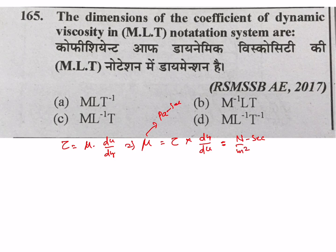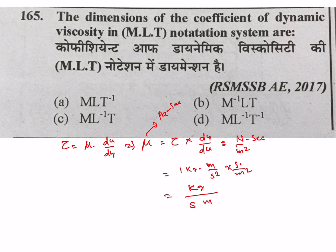Since 1 newton equals 1 kg into meter per second square, you get kg per second per meter — that is mass M, length L, time T. So the dimension is M to the power 1, L to the power minus 1, T to the power minus 1. From the options, D is your correct answer.